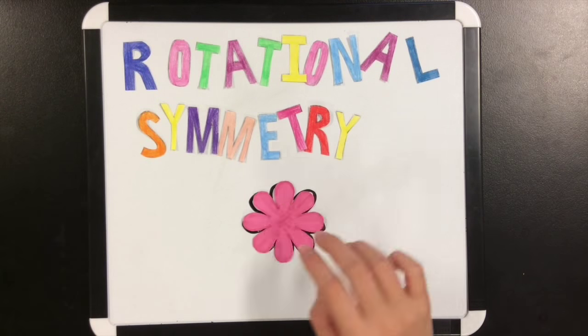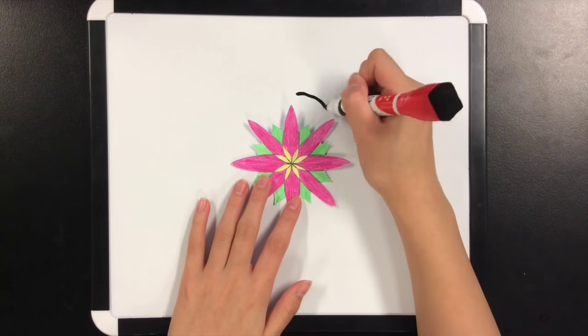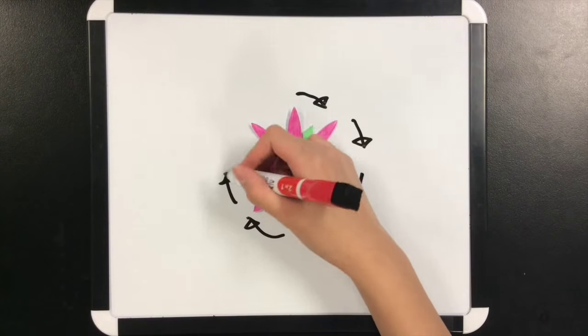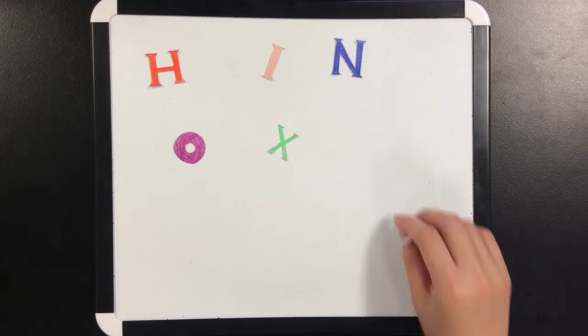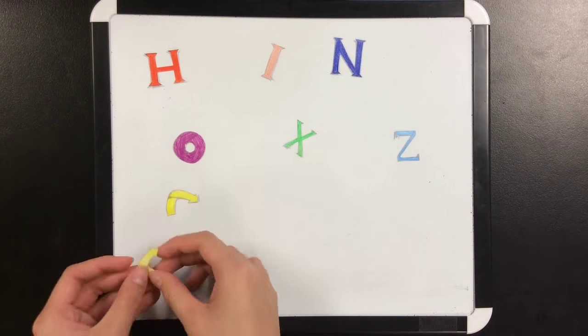Rotational symmetry has to do with objects that can be rotated about a pivot and can still coincide with the original shape at least once in less than a 360 degrees turn. There are also many rotational symmetrical objects in daily life, even though you may not notice.